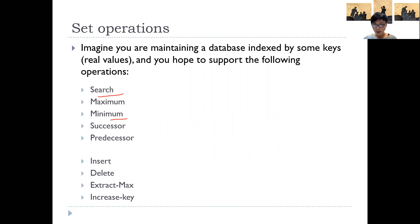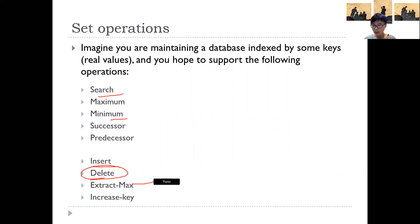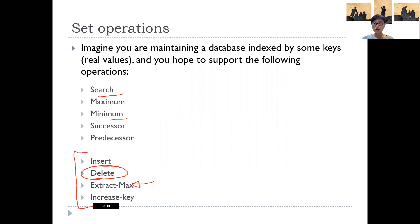Namely, insertion — you may want to insert a new record of a new student. Students graduate, you may want to delete their record. Or you want to find a certain student with a certain property and then delete it from the database. This is called dynamic operations because it changes the database itself, while performing a search query doesn't change the database.